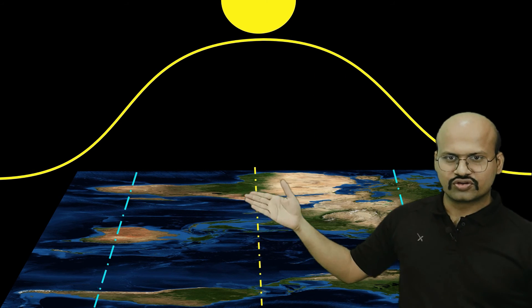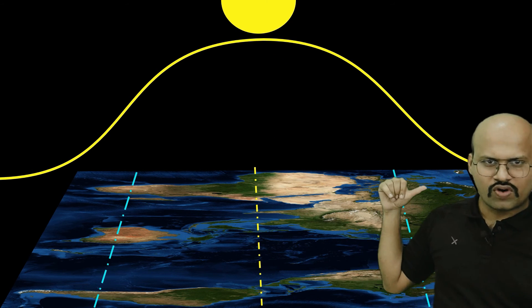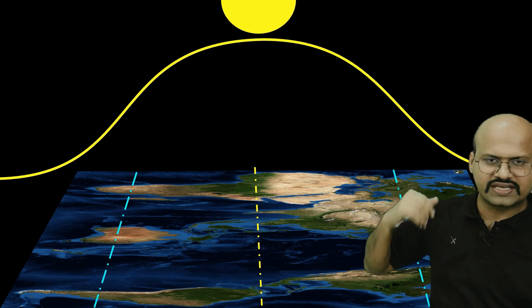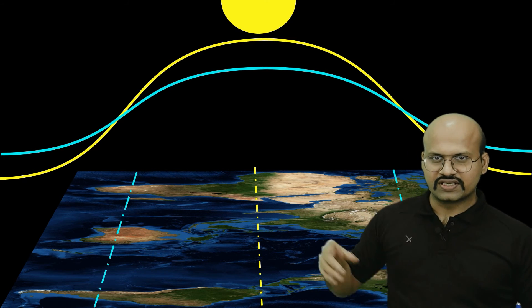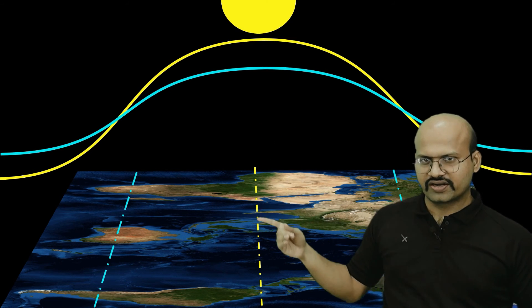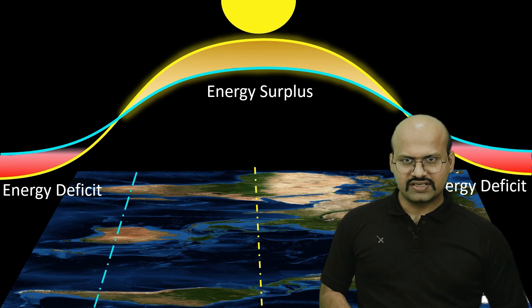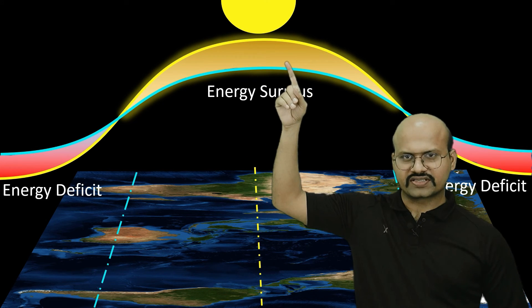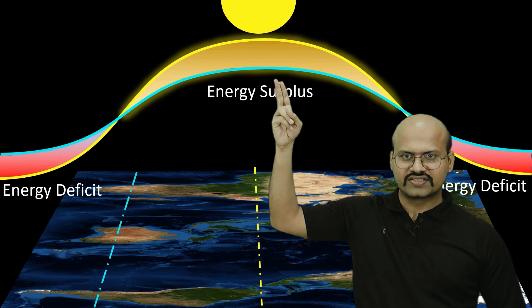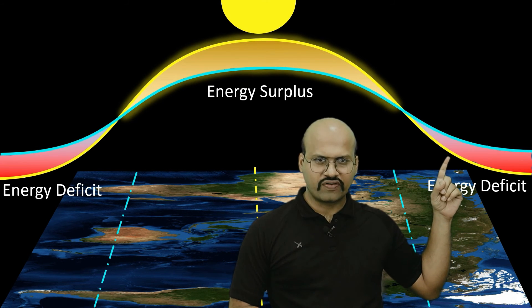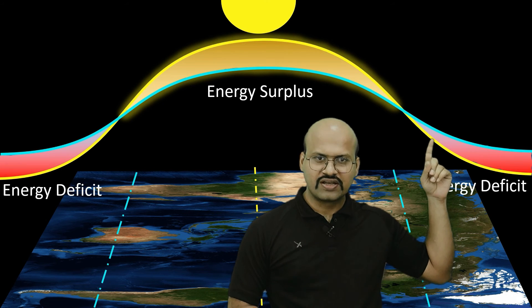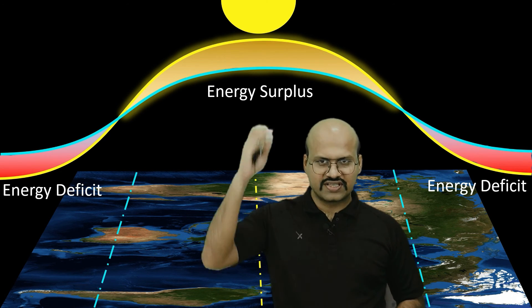This line indicates the amount of solar energy received by the whole Earth. We see that at the equator we receive the maximum amount of energy, while in the polar region this amount decreases. The blue line indicates the amount of energy radiated from Earth. At the equator there is an energy surplus — the amount of energy received is more than the amount radiated back to space — while in the polar regions the energy received is less than the energy radiated back.